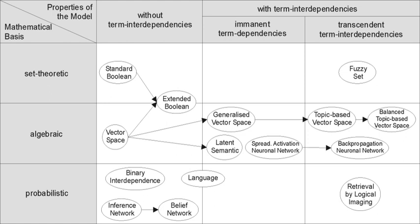In 1982, Nicholas J. Belkin, Robert N. Oddy, and Helen M. Brooks proposed the ASK ("Anomalous State of Knowledge") viewpoint for information retrieval, an important concept though their automated analysis tool proved ultimately disappointing. In 1983, Salton and Michael J. McGill published Introduction to Modern Information Retrieval, with heavy emphasis on vector models. In 1985, David Blair and Bill Maron published "An Evaluation of Retrieval Effectiveness for a Full-Text Document Retrieval System." In the mid-1980s, there were efforts to develop end-user versions of commercial IR systems. From 1985–1993, key papers and experimental systems for visualization interfaces were produced.